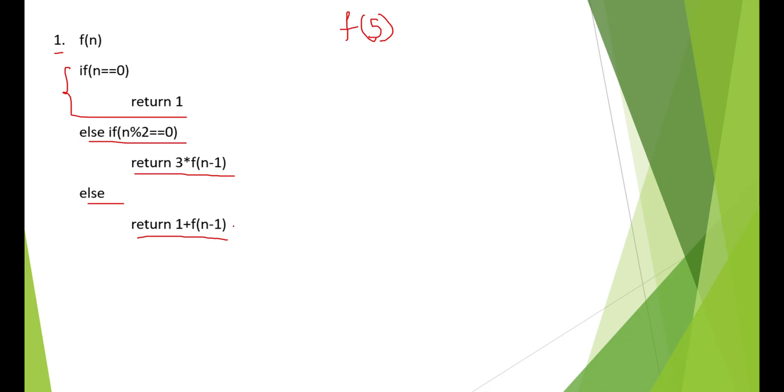If you start for f of 5, it enters this function. We know that 5 is an odd number, so it goes to the else part. What you should return is 1 plus f of n minus 1, that is f of 4. Again, f of 4 enters the function.